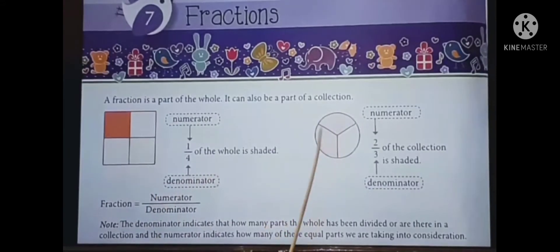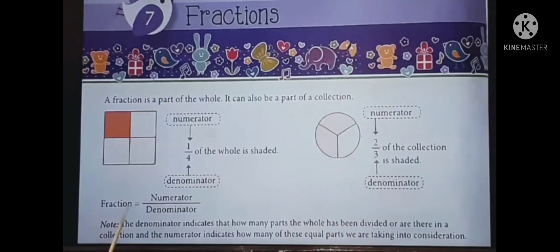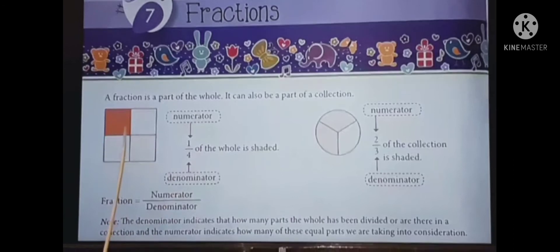In this circle, it is divided into three parts. So it is written as two by three. Two is numerator, three is denominator. Two by three of the collection is shaded. Fraction is equal to numerator by denominator. Note: the denominator indicates the whole part, and the numerator indicates the shaded part.